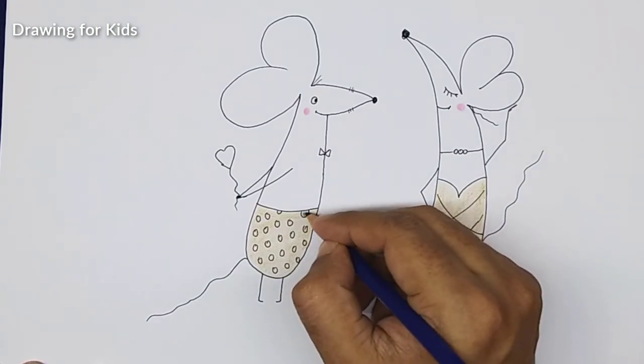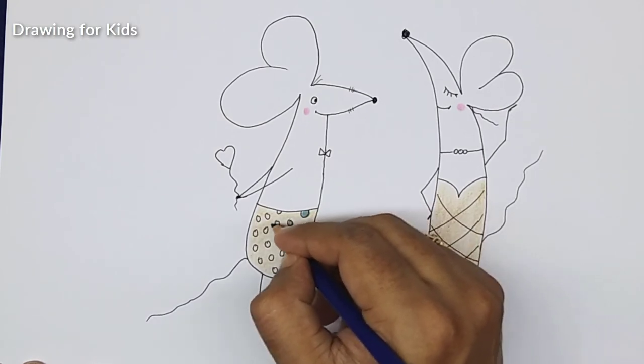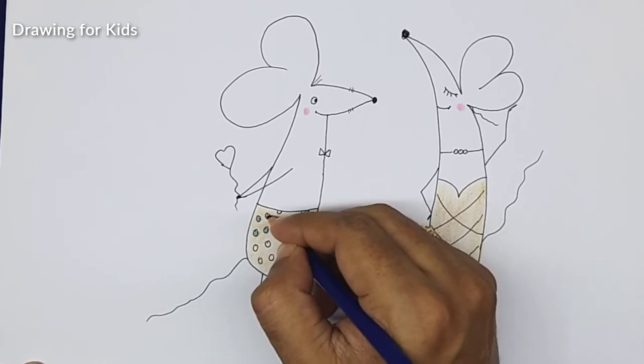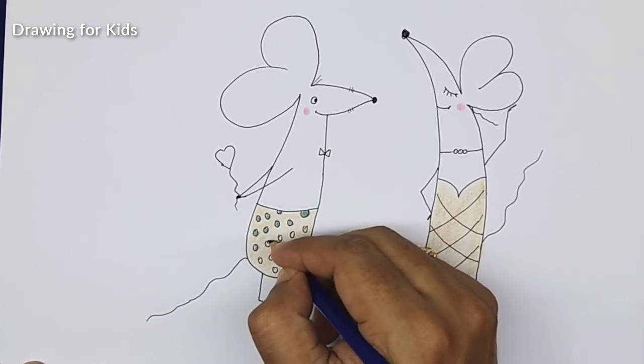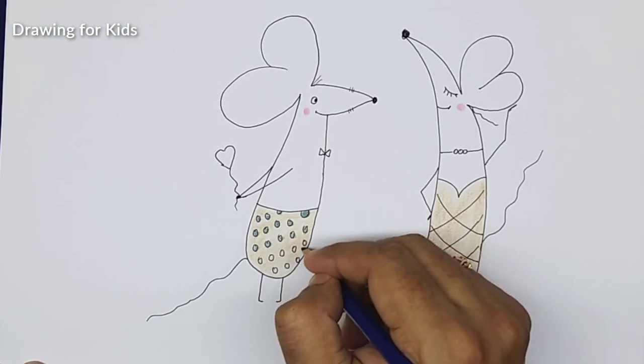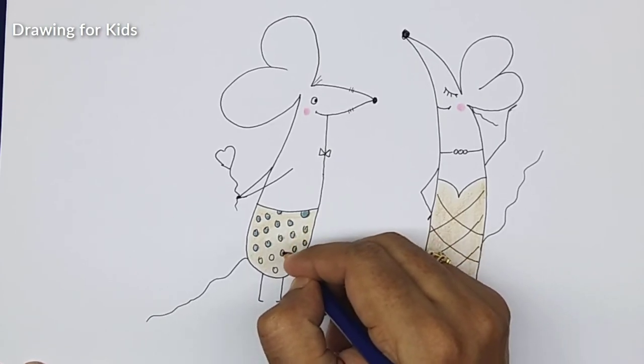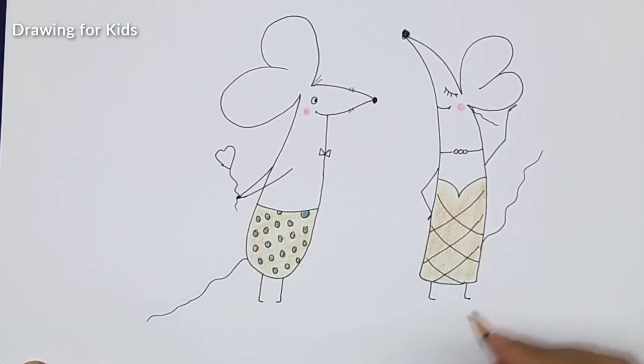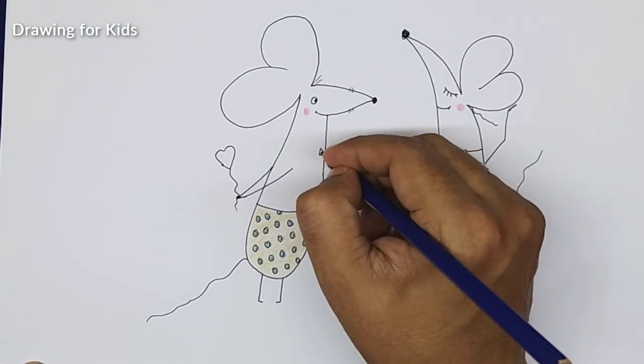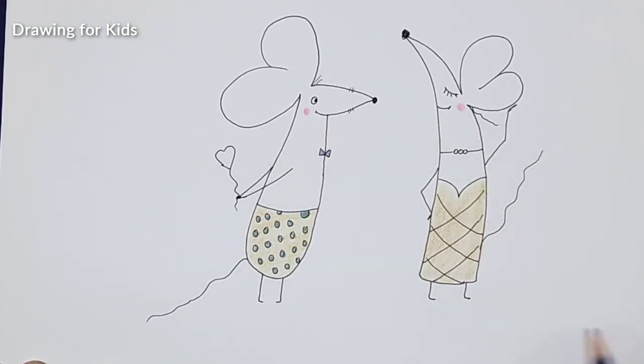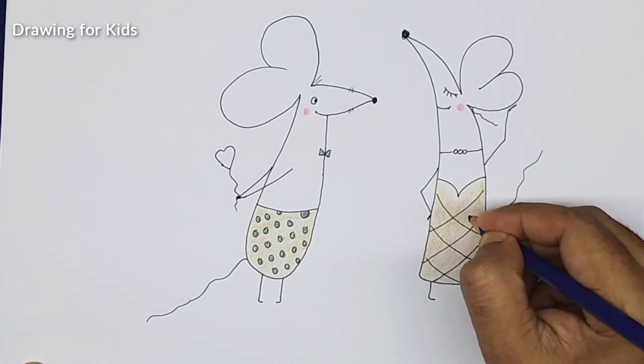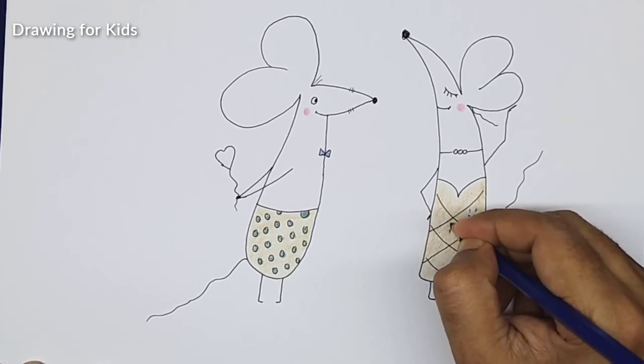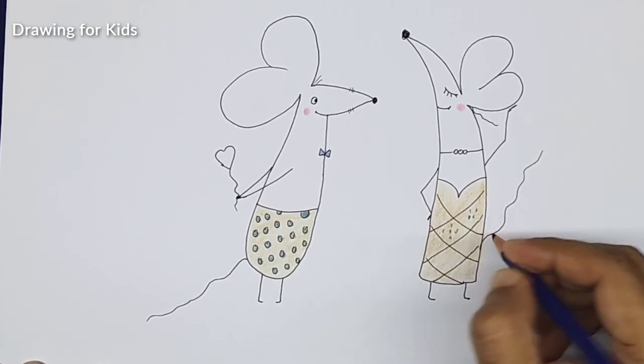This comes blue on top of it here. Interesting. I think I can make something here also for her dress. Look nice.